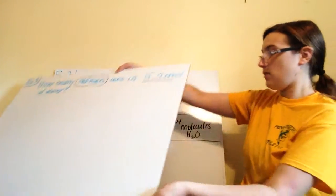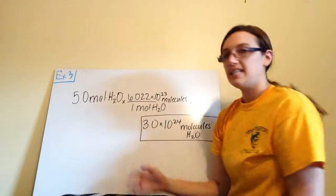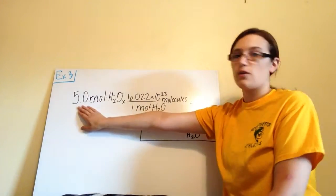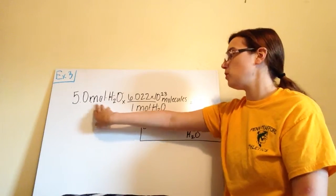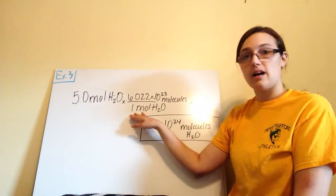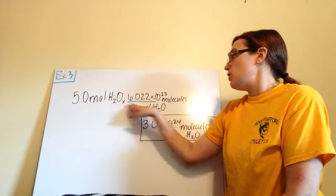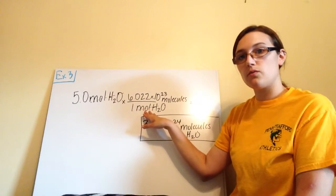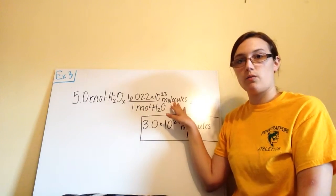Once I know my given and what I'm trying to find, I can set up my conversion. Use dimensional analysis. I start with my given, 5.0 moles of water. While I have moles of water on the top here, I need moles of water on the bottom. So my moles cancel, but what I'm trying to do is get from moles of water to molecules of water.